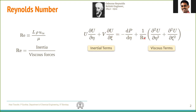Reynolds number is the ratio of inertia to the viscous forces, and this familiar expression is L·ρ·u/μ, or L·u/ν, where ν = μ/ρ is the kinematic viscosity.